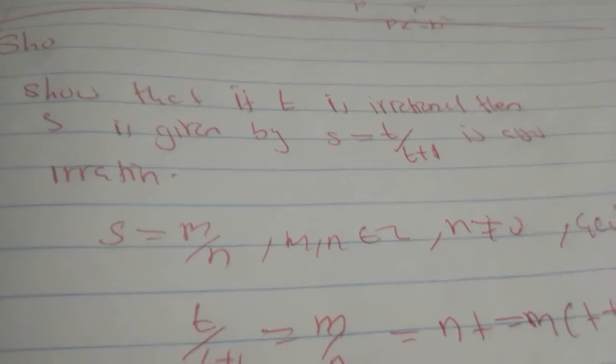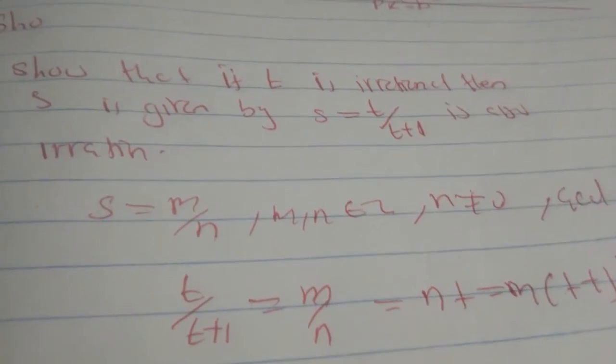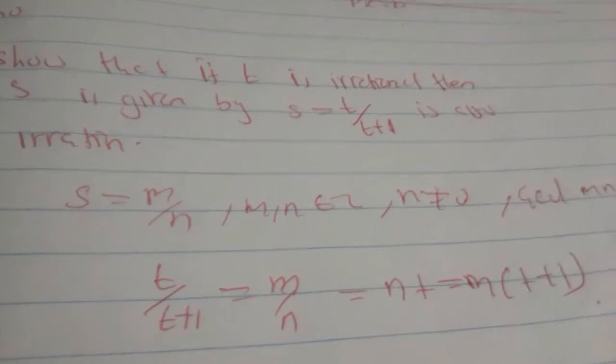Then we can write s equal to m over n, where m and n is element of Z and n is not equal to zero.